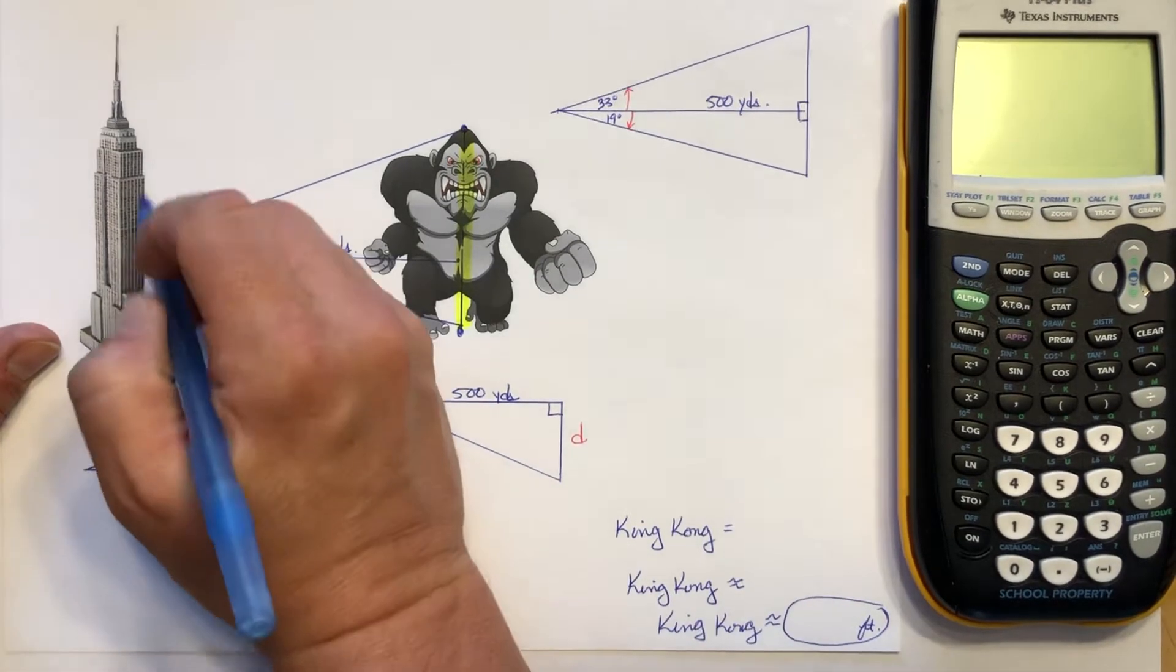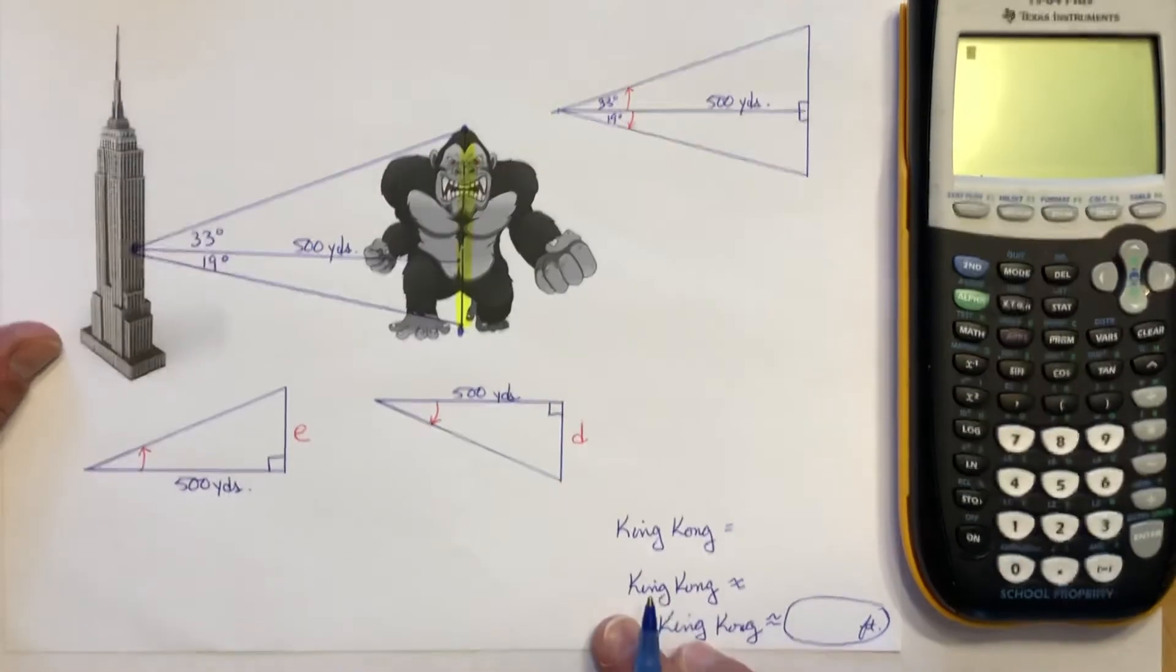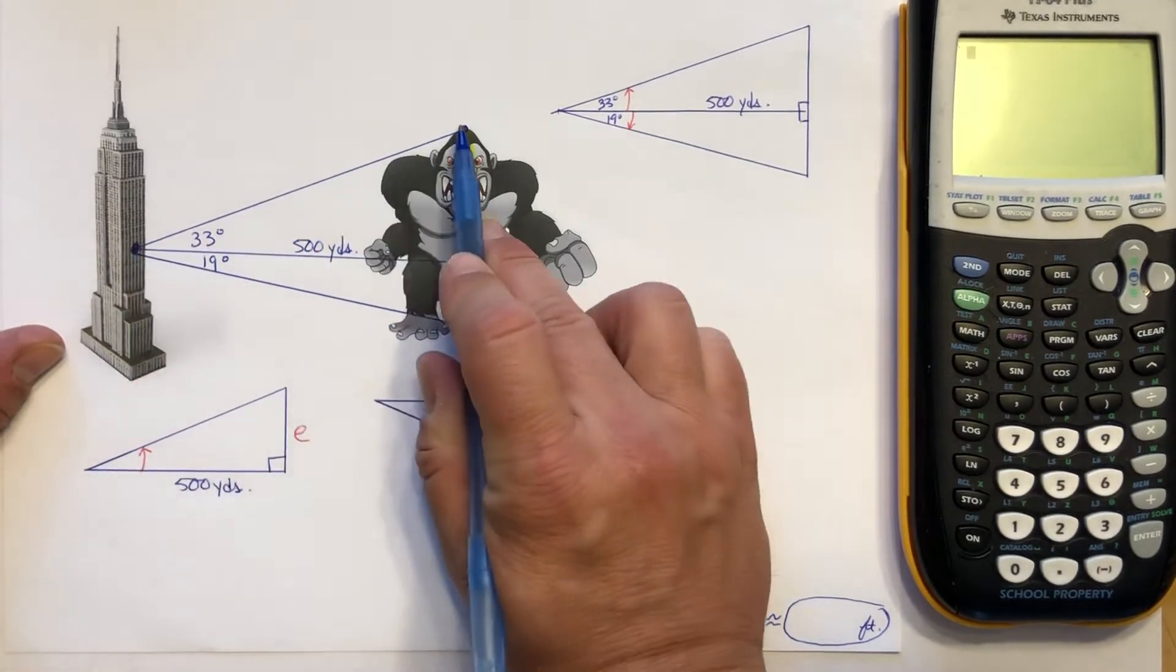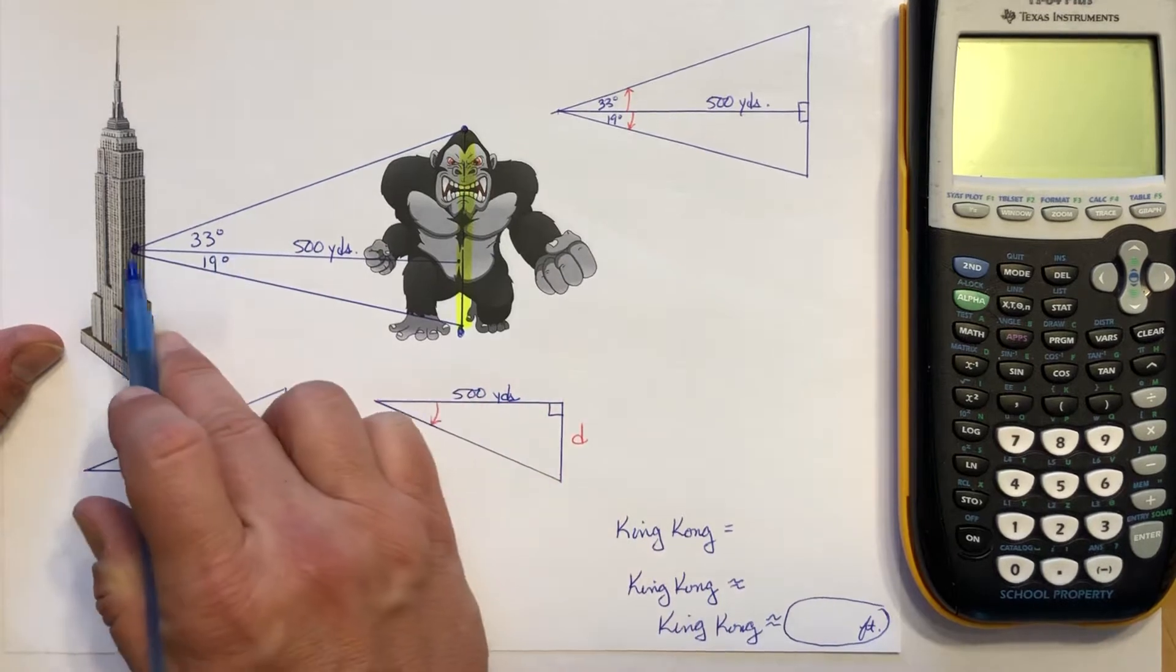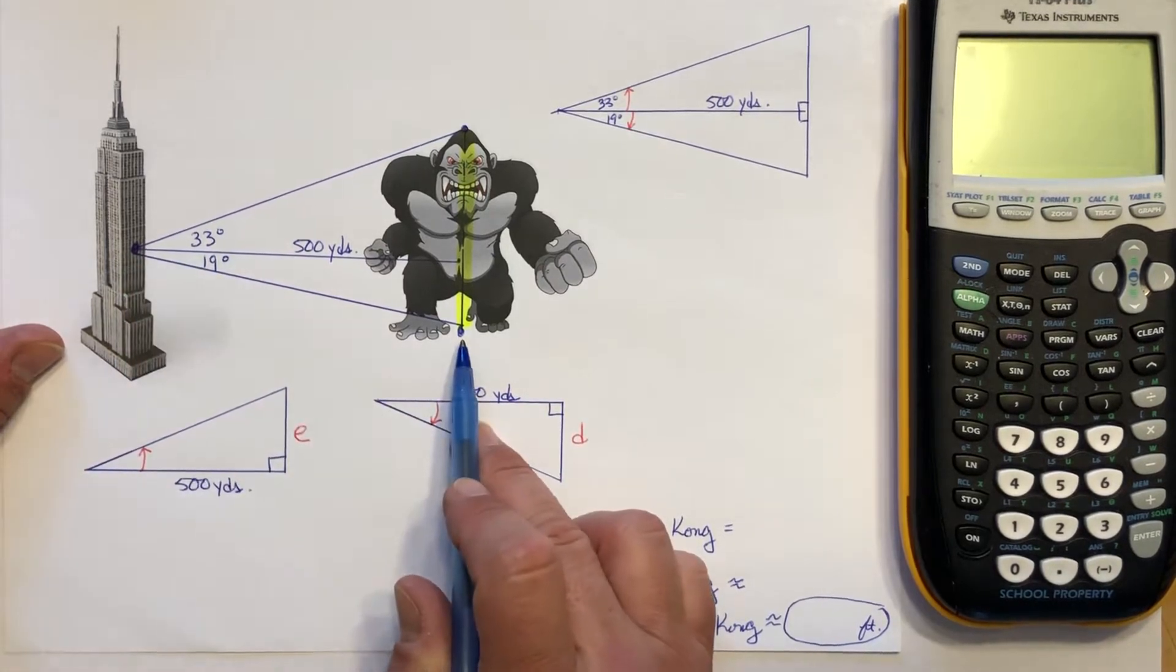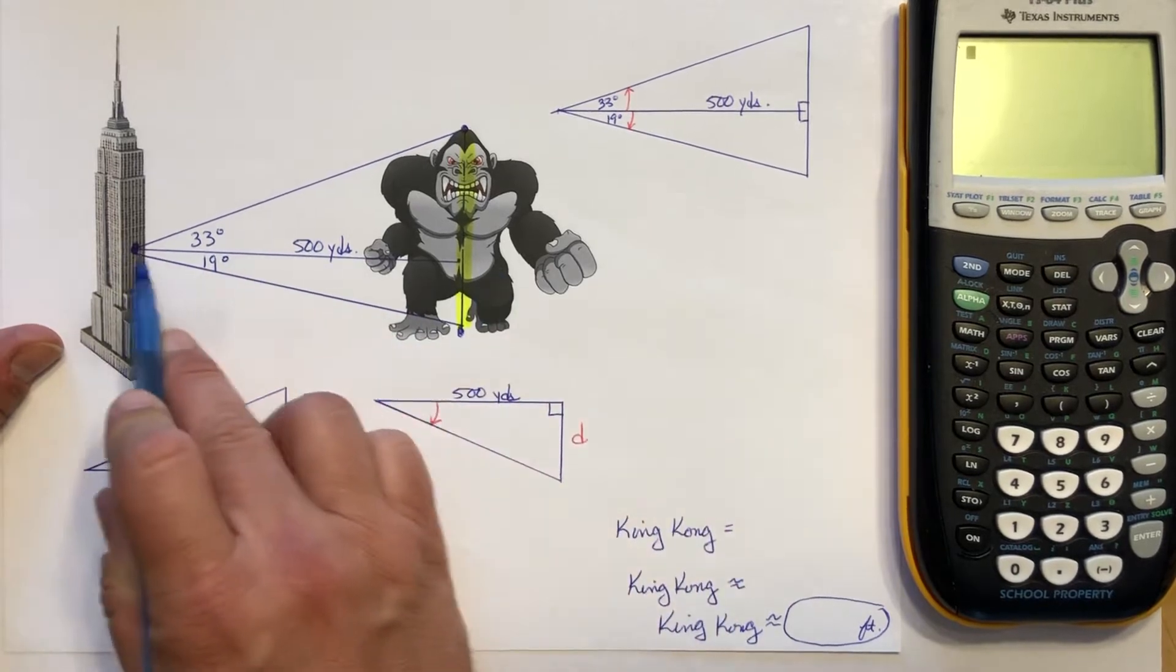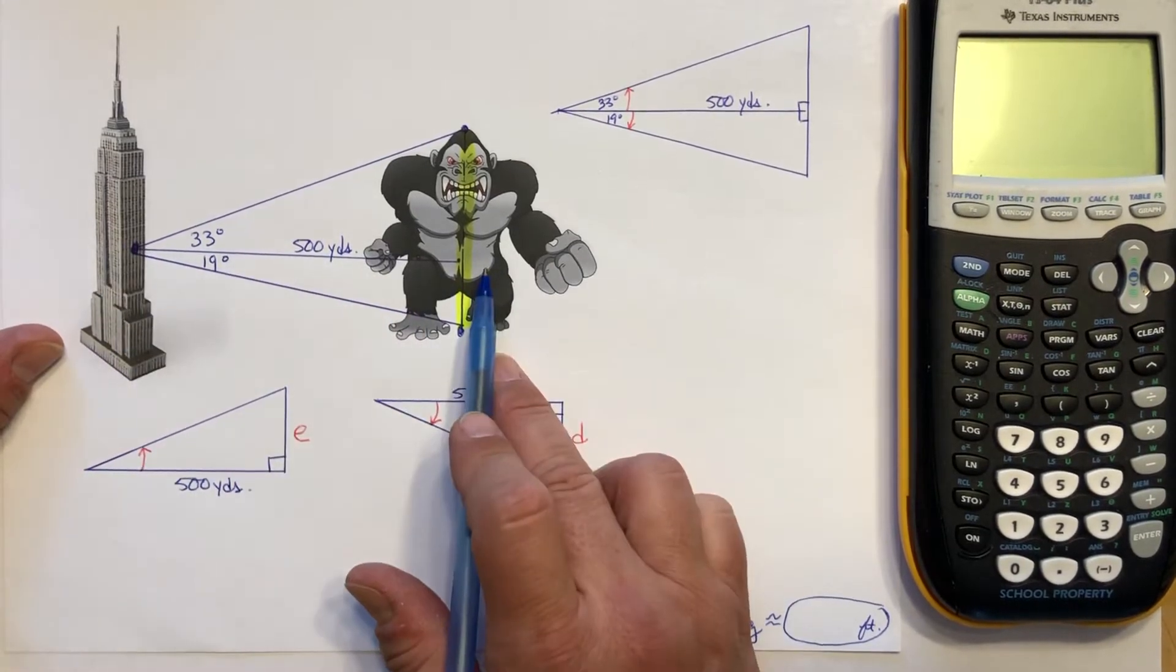So basically there is an observer in the Empire State Building and they see King Kong approaching. So the observer cites the top of King Kong's head at an angle of 33 degrees, his feet at the bottom at 19 degrees. Of course we have our horizontal line in between with a hundred yard distance in the horizontal direction.